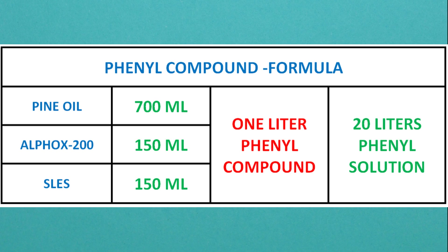Penyl 700 ml, Alphox 200 150 ml, Sles 150 ml. Collectively this will give 1 liter of phenyl compound.